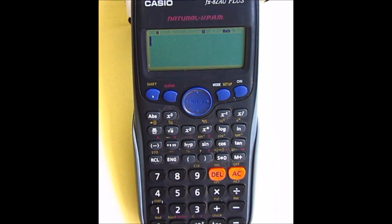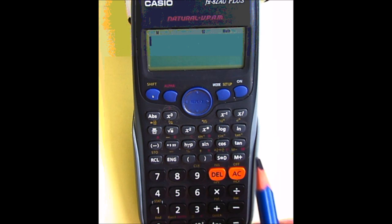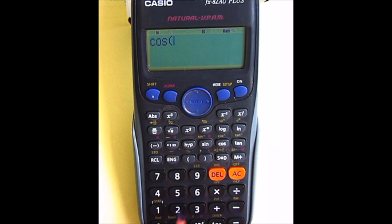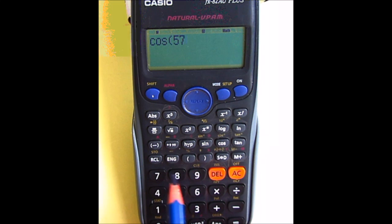Now the Casio scientific calculator works much the same way. If I were to hit cosine of 57 and hit the degrees, minutes, seconds button, which is this one here.